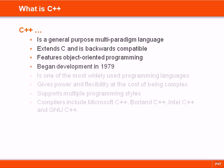The development of C++ started in 1979, seven years after C first made its appearance. Despite being what many consider legacy languages, C and C++ are still the most widely used languages in the software industry.